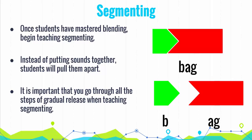Once students have mastered the skill of blending, the same lesson can be used to teach segmenting. Go through the same process of guided release, but model for students how to break the words apart. Say a word such as 'bag,' then pull the green piece away saying the sound as you do — 'b.' Then point to the red part and say the remaining sound, 'ag.' Then say each sound separately: 'b... ag.'